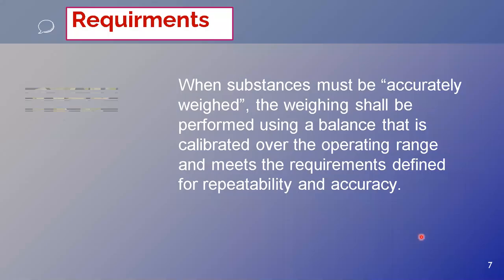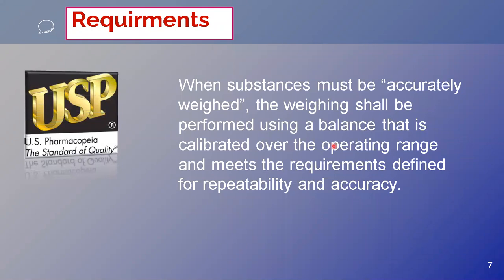Now, what is the requirement? When a substance must be accurately weighed, the weighing shall be performed using a balance that is calibrated over the operating range and meets the requirements defined for repeatability and accuracy. Whenever we are told to weigh accurately, we must weigh on a balance where the weight taken is within that balance's operating range, which is defined on the basis of two parameters: repeatability and accuracy.